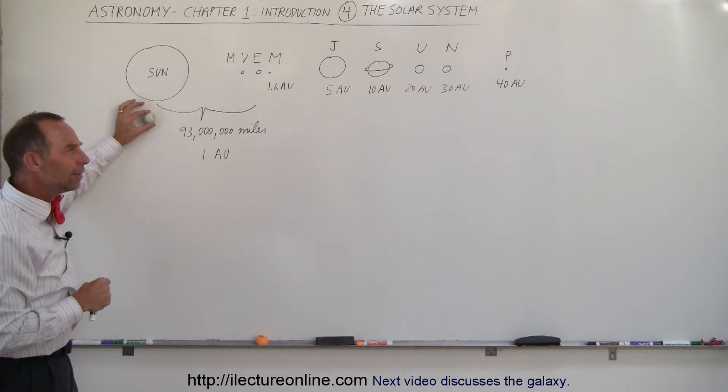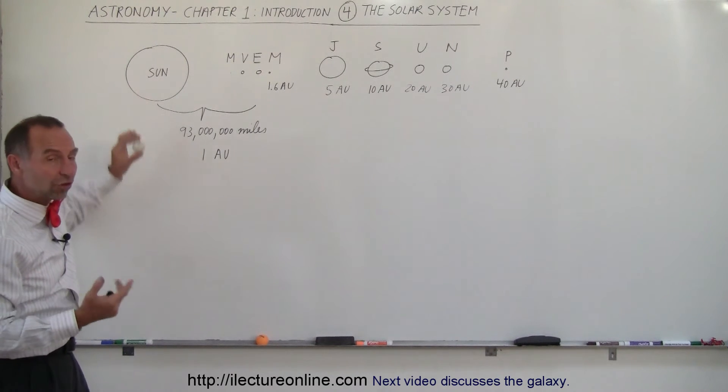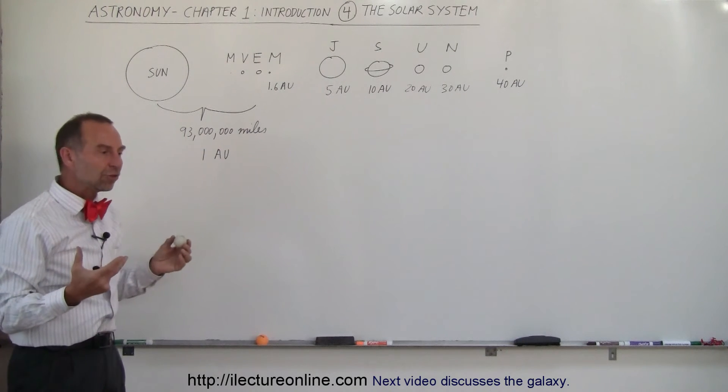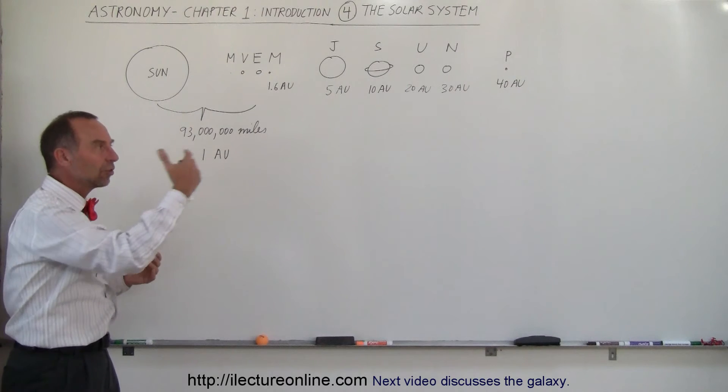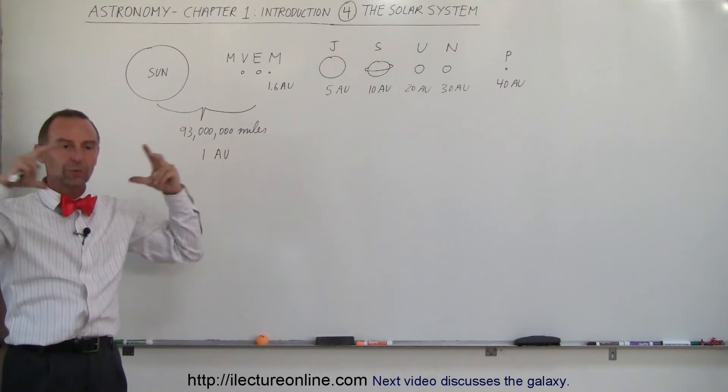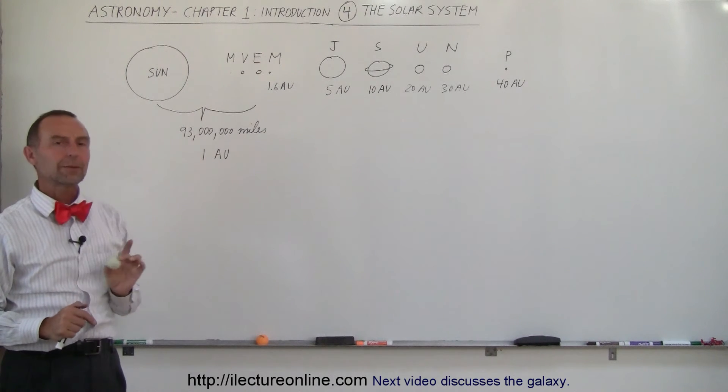At that scale, it would be almost 4,000 feet to Pluto, which is just shy of a mile. So imagine that the solar system containing all the planets and the moons and some of the trans-Neptunian objects would all fit into a sphere with a radius of one mile if the Sun was the size of a ping-pong ball.